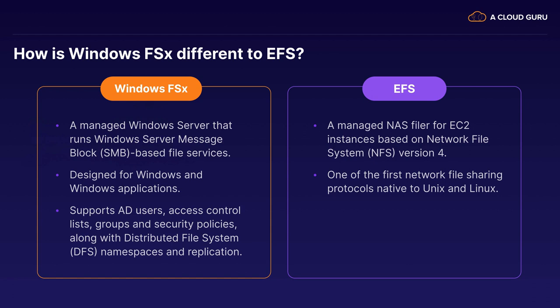So if you have an exam question asking what storage you should choose and it's SMB-based — Server Message Block-based — then you're going to go for Windows FSx, because EFS is not SMB-based. EFS is a managed NAS filer for EC2 instances and it's based on the network file system protocol, NFS version 4. It was one of the first network file sharing protocols native to Unix and Linux, and Amazon does not support EC2 instances running Windows to connect to EFS. It's Linux only.